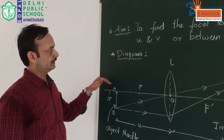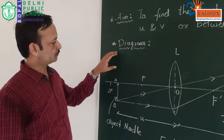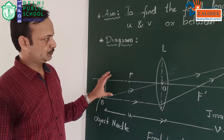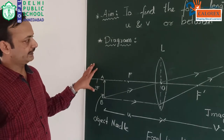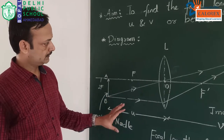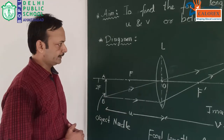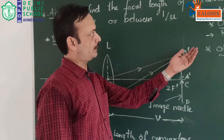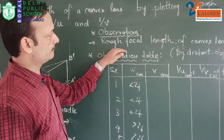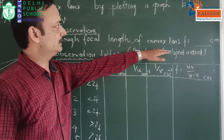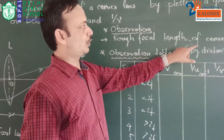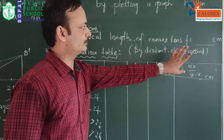In the next part you are supposed to draw a ray diagram — any ray diagram or one of the situations we have. After drawing the ray diagram we will move on to the next part, that is observations. In observations we are first finding the rough focal length of the convex lens, which has to be mentioned in the first part of the record using the distant object method.